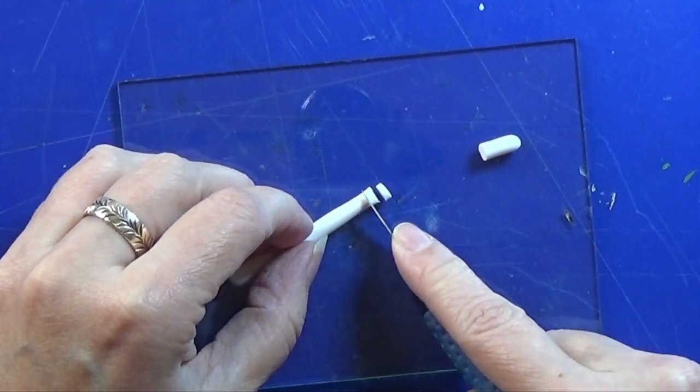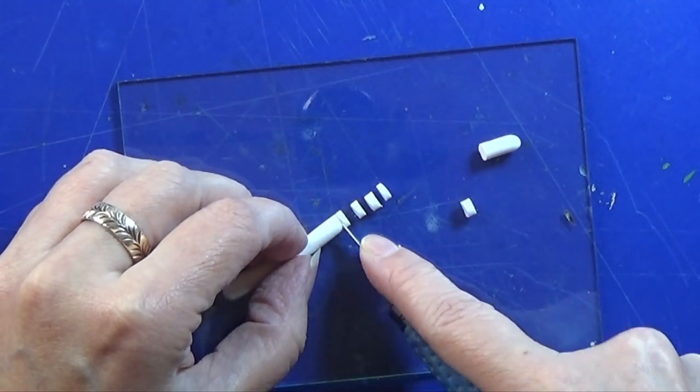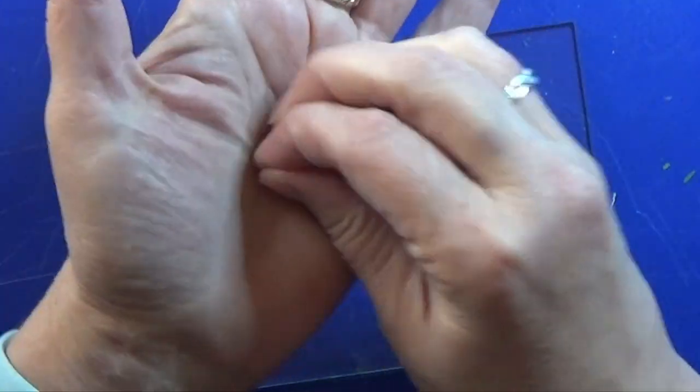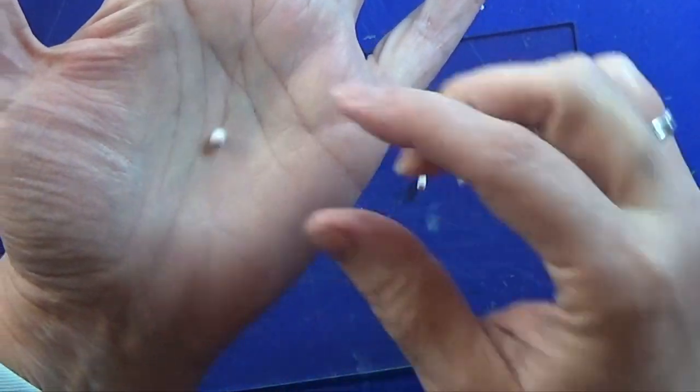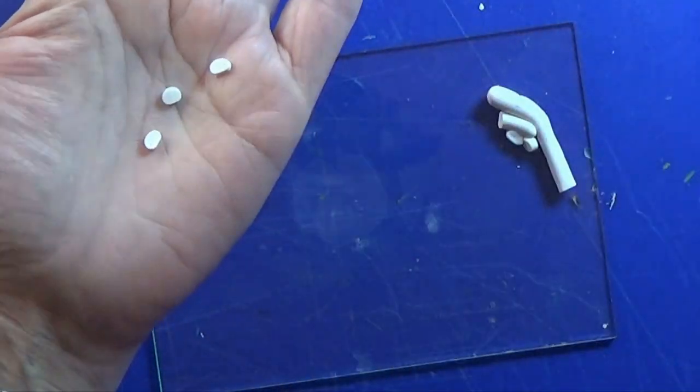I rolled out a piece of opaque white clay and I cut out four equal sizes of this cane. Then I'm just going to roll that into a small ball and I'm gonna do that with all four of these, and then I will bake them together with the rest later.